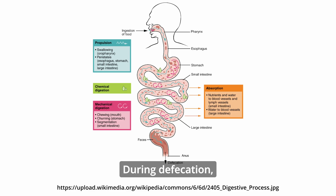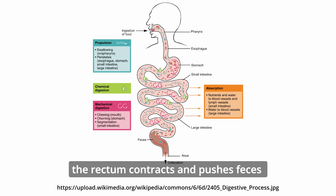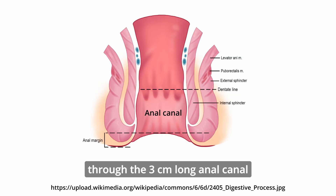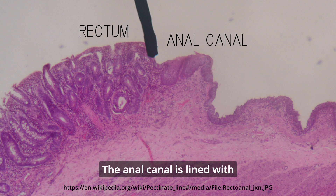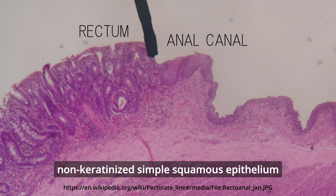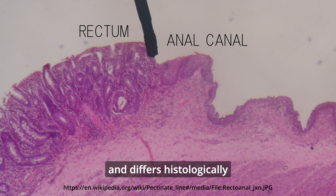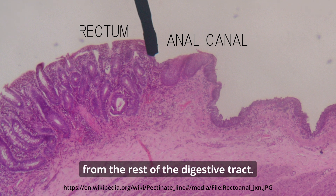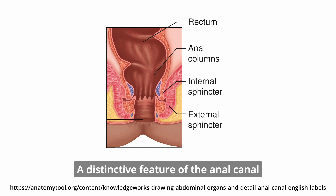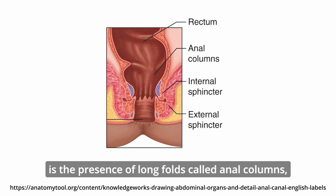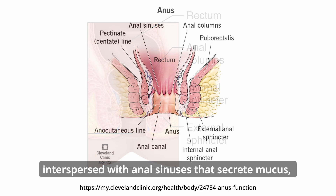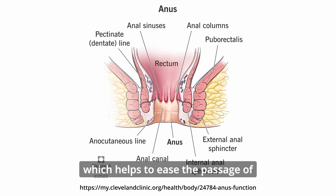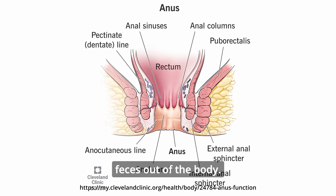During defecation, the rectum contracts and pushes feces through the 3 cm long anal canal and out through the anus. The anal canal is lined with non-keratinized simple squamous epithelium and differs histologically from the rest of the digestive tract. A distinctive feature of the anal canal is the presence of long folds called anal columns, interspersed with anal sinuses that secrete mucus, which helps to ease the passage of feces out of the body.